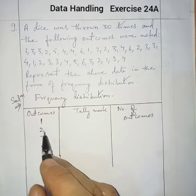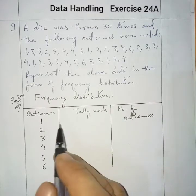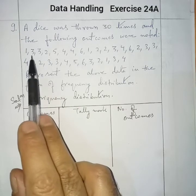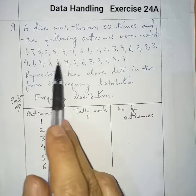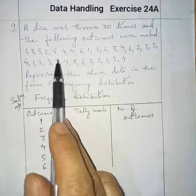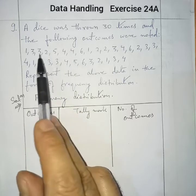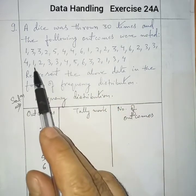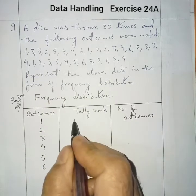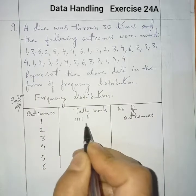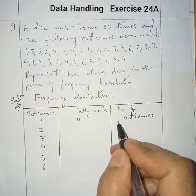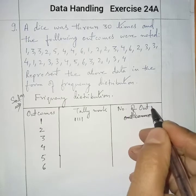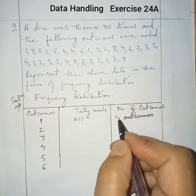So outcomes are 1, 2, 3, 4, 5, 6. Now for outcome 1, we count how many ones are there from the outcomes — we can also arrange in ascending order, but without arranging we are doing it here. There are 4 ones, so the tally mark shows 4 and the number of outcomes for 1 is 4.